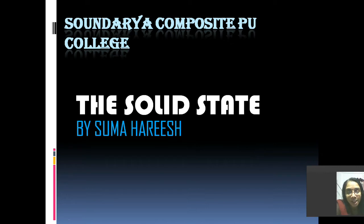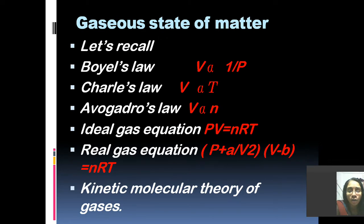Hello students, today we are going to start a new chapter which has a correlation with the chapter we studied last year. Can you guess which chapter? Yes, it's states of matter. Last year in that chapter we studied about the gaseous state of matter where we discussed Boyle's law, Charles' law, Avogadro's law, which describes the behavior of gases, and we derived the ideal gas equation. We also discussed the deviation of ideal gas to real gas behavior and the kinetic molecular theory of gases. This year we have to cover the other two states of matter — the solid state as well as the liquid state.